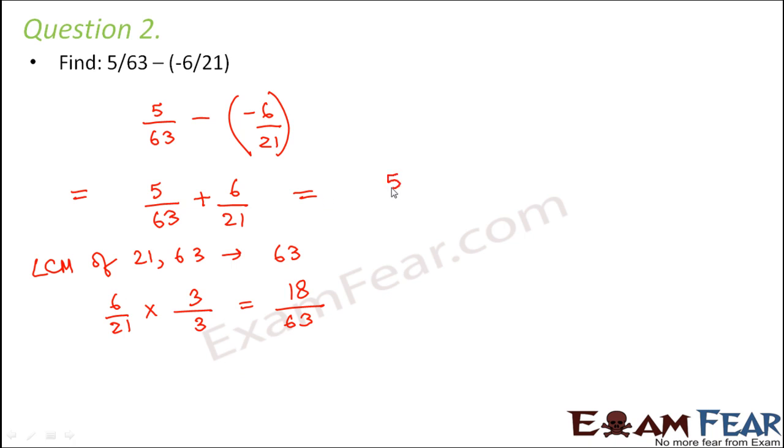Therefore, this can be written as 5/63 + 18/63. So this would be 5 + 18 divided by 63 that is equal to 23/63. So this would be the answer.